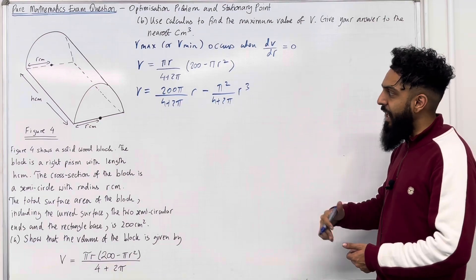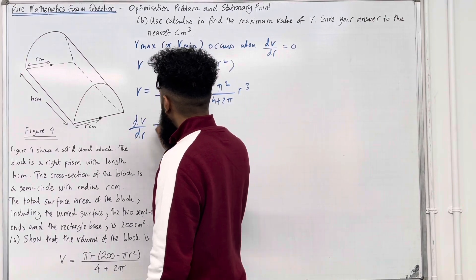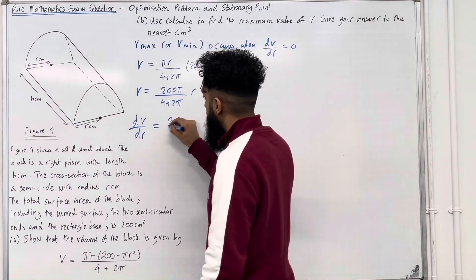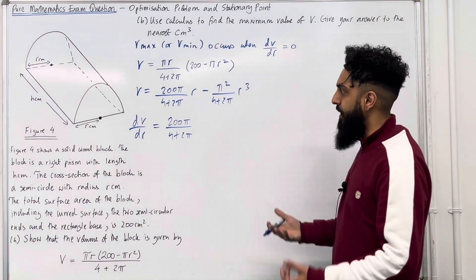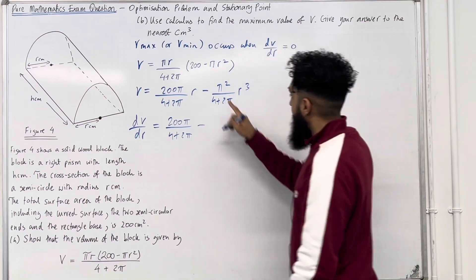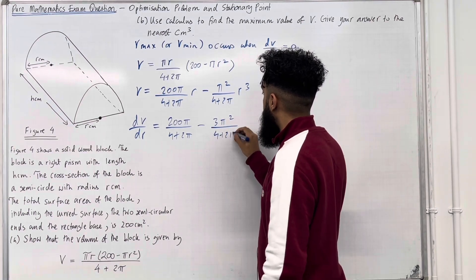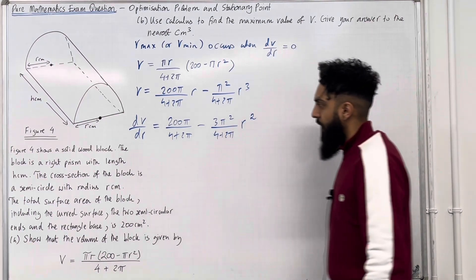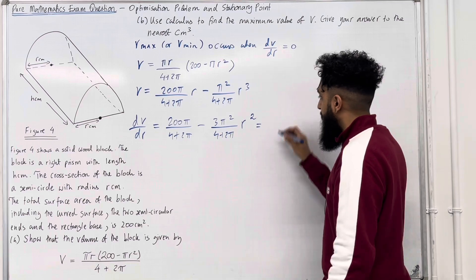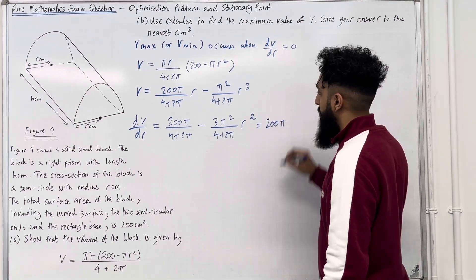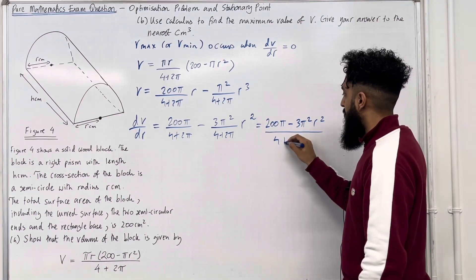Applying year 1 differentiation — bring down the power, subtract 1 from the power — dV/dr equals 200 pi over (4 plus 2 pi) minus 3 pi squared over (4 plus 2 pi) r squared. Remember, pi is a constant, not a variable. Since we have a common denominator, this can be written as a single fraction: dV/dr equals (200 pi minus 3 pi squared r squared) all over (4 plus 2 pi).